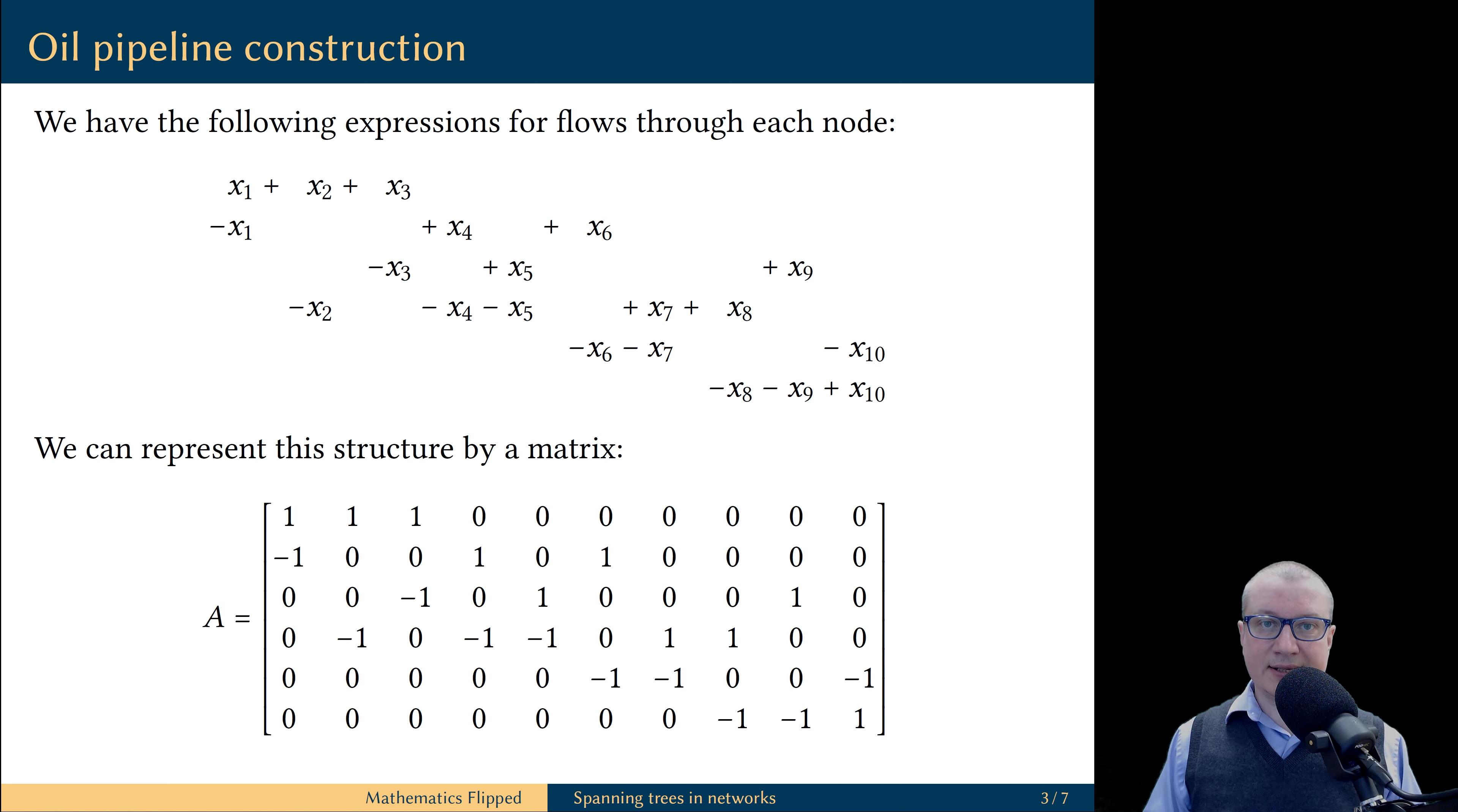This matrix has six rows, one row for each node of the network, and 10 columns. Each column corresponds to one branch of the network.